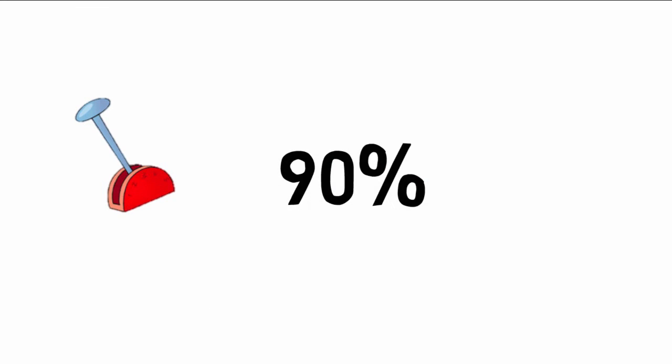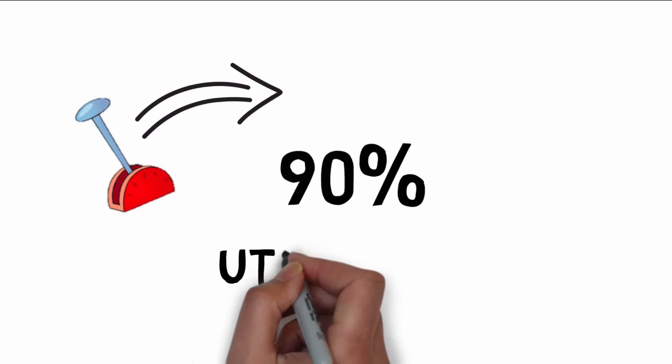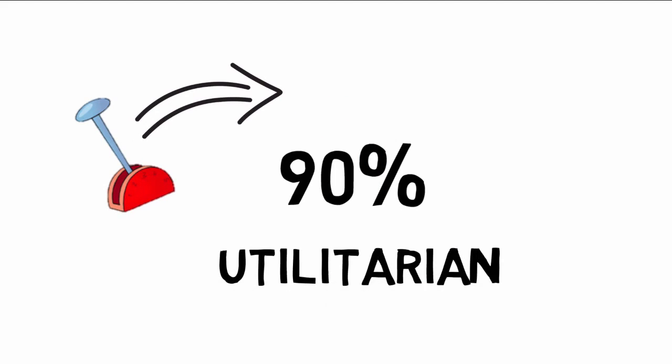90%. Nine out of ten people when presented with this scenario said they would pull the lever, sacrificing one to save five. It is a utilitarian approach. With 90% pulling the lever, this seems to resolve our ethical dilemma.